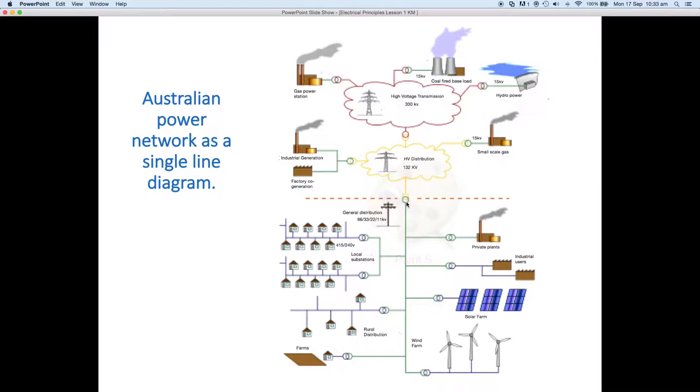As we get past distribution, we come down to this green section where we've got general distribution. General distribution can be at 66, 33, 22, or 11 kV, depending on which power supply or distribution company is where you are working. Then it drops down into substations and finally pole mount substations or pad mount substations, where the supply is dropped down to 415 and 240 volts for your local consumption.